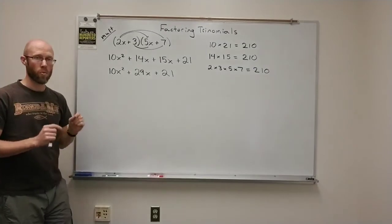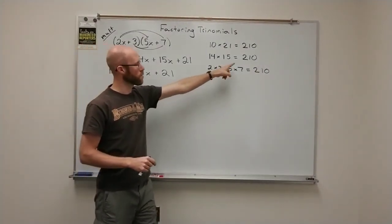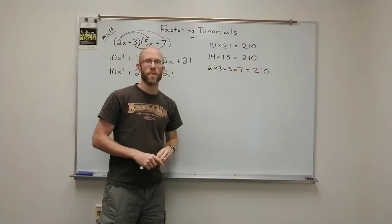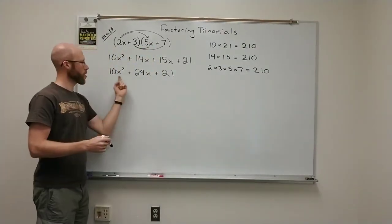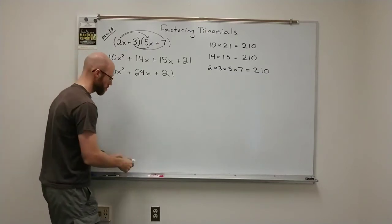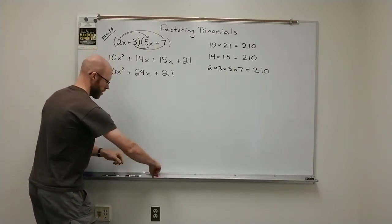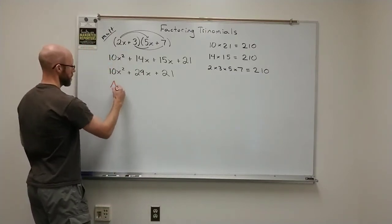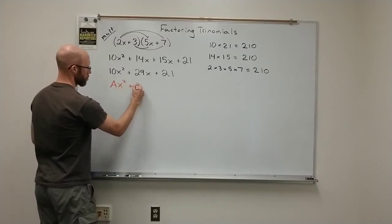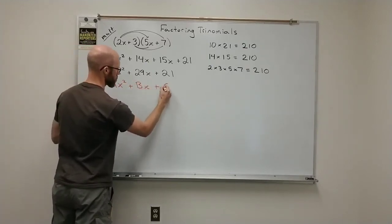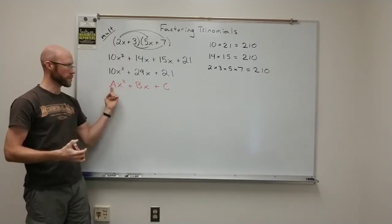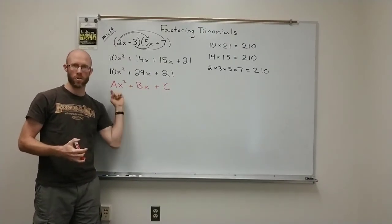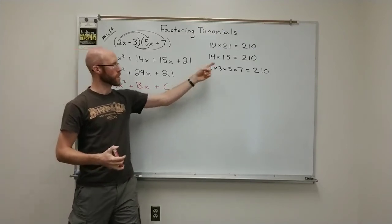Why is that important? Well, this number 210 is what we would consider AC, right? The trinomial here is in the form that we call Ax² plus Bx plus C. And if you were to multiply the lead coefficient and the constant, which are the AC, you will get this 210.